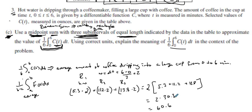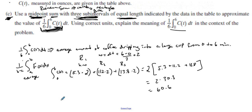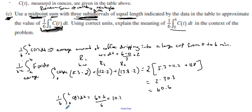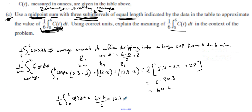Since all widths are 2, we factor out the 2 and add: 5.3 + 11.2 + 13.8 = 30.3, then multiply by 2 to get approximately 60.6. This is the approximation of the integral from 0 to 6 of c(t) dt. To find the average value, we take one-sixth times 60.6, which equals 10.1 ounces.